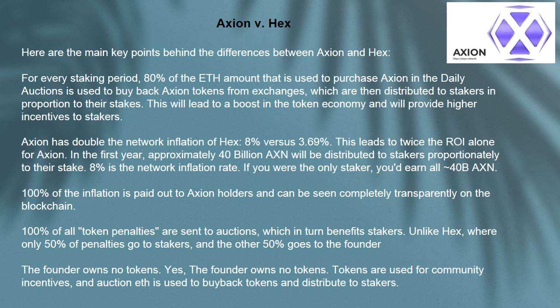100% of the inflation is paid out to Axion holders and can be seen completely transparently on the blockchain. 100% of all token penalties are sent to auctions, which in turn benefits stakers. Unlike HEX, where only 50% of penalties go to stakers and the other 50% goes to the founder — the Axion founder owns no tokens. Tokens are used for community incentives, and auction fees are used to buy back tokens and distribute to stakers.